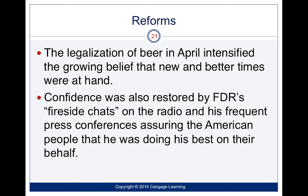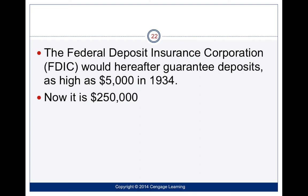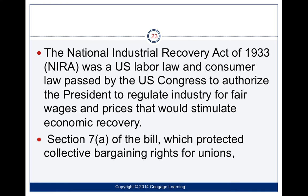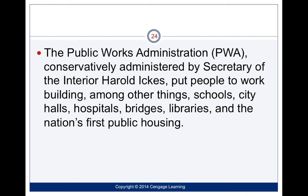The legalization of beer and the repeal of the 18th Amendment also helped create economic relief. The Federal Deposit Insurance Corporation was established, guaranteeing deposits as high as $5,000 in 1934, now up to $250,000 per account. The National Industrial Recovery Act was passed to authorize the president to regulate industry for fair wages, protect unions, and support collective bargaining. We also saw the Public Works Administration, which put people back to work in construction — building schools, municipal buildings, hospitals, bridges, and libraries.